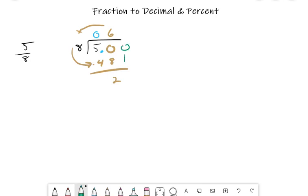Bring it down and now we have 20. It goes into 20 twice, so 2 times 8 is going to give us 16, and that gives us 4 as a remainder. And now again we add another zero, bring it down.